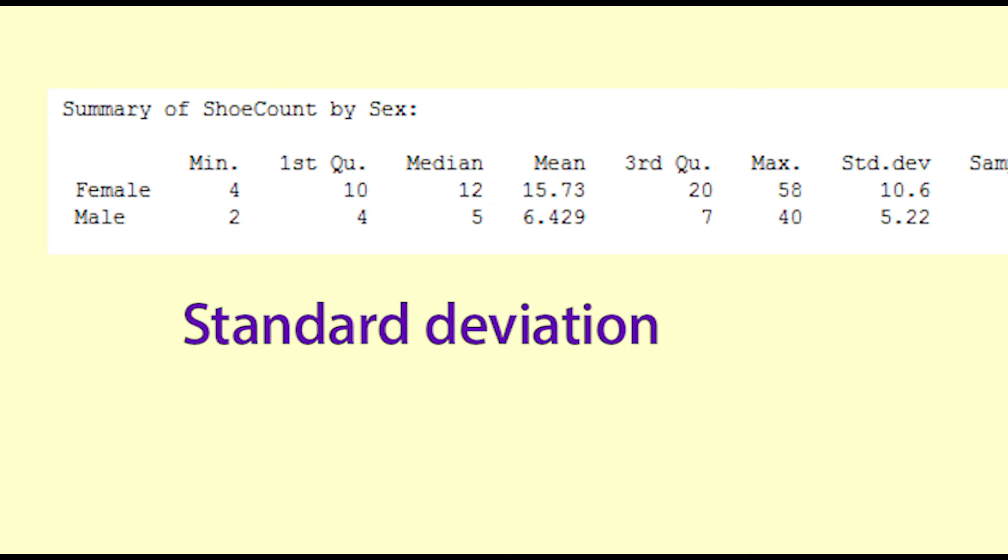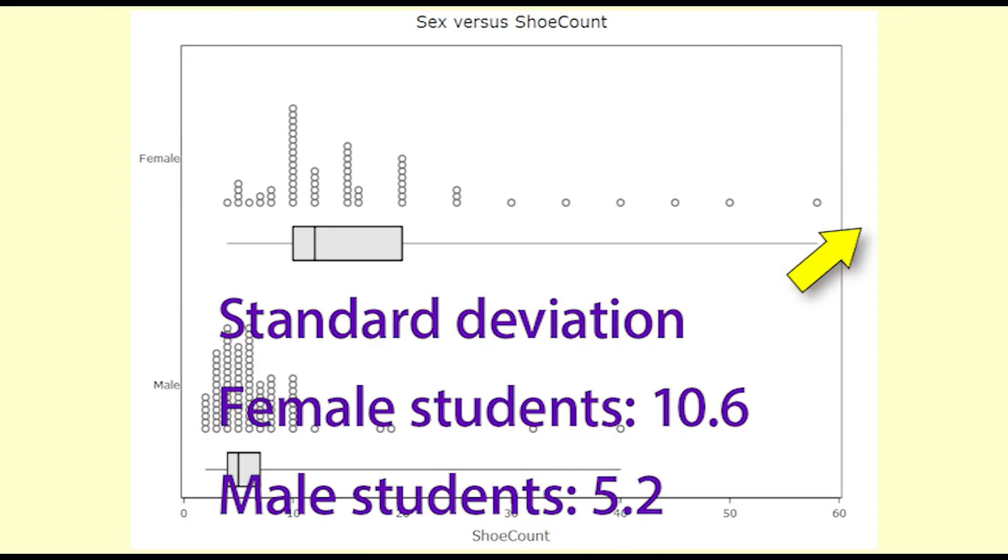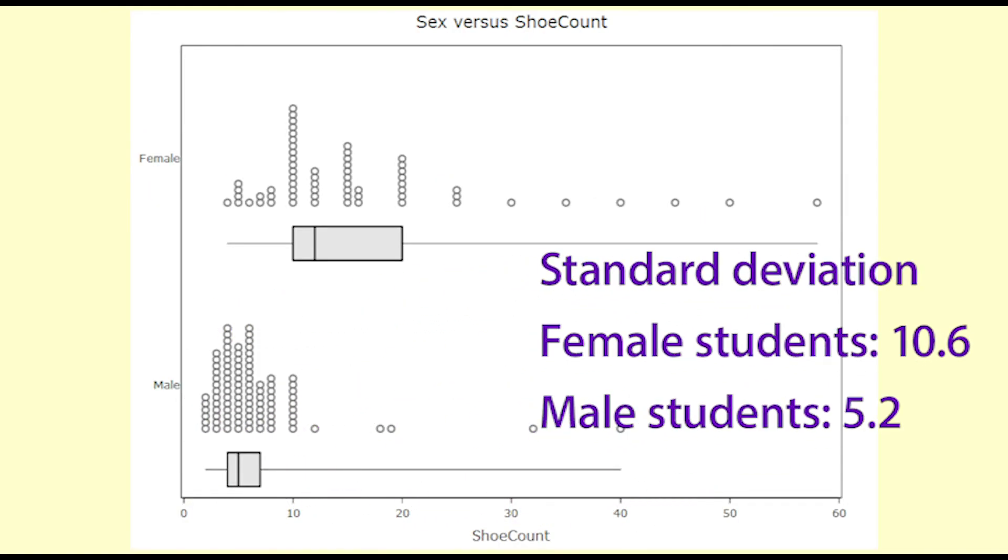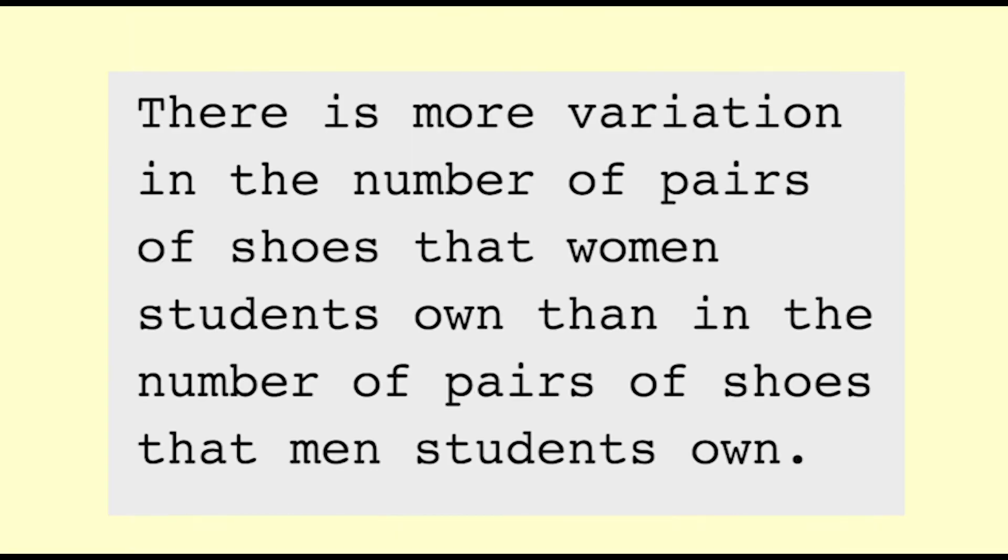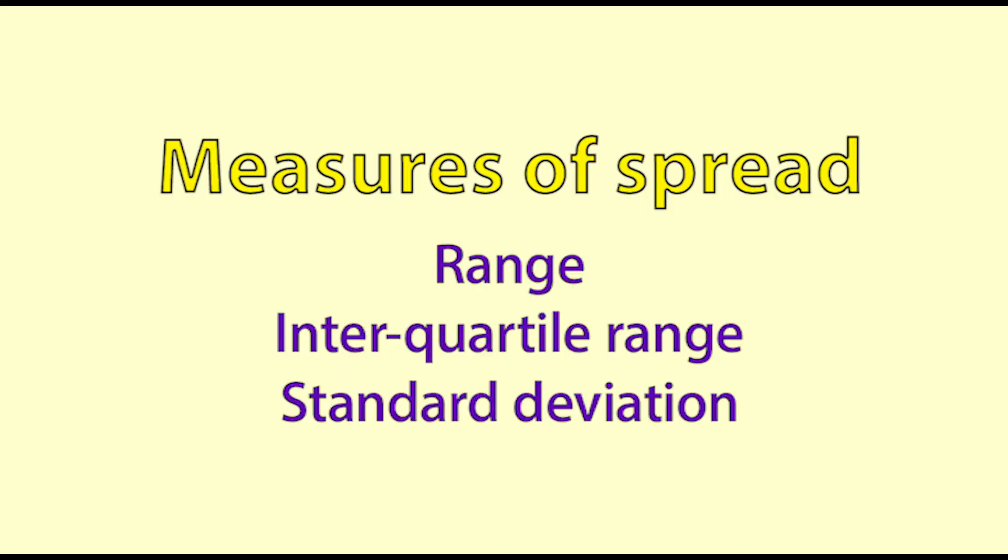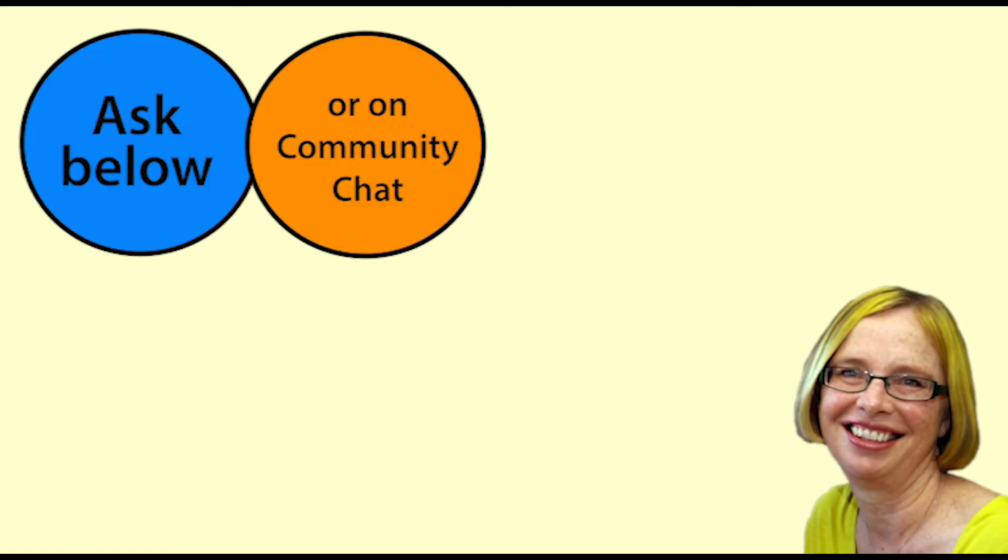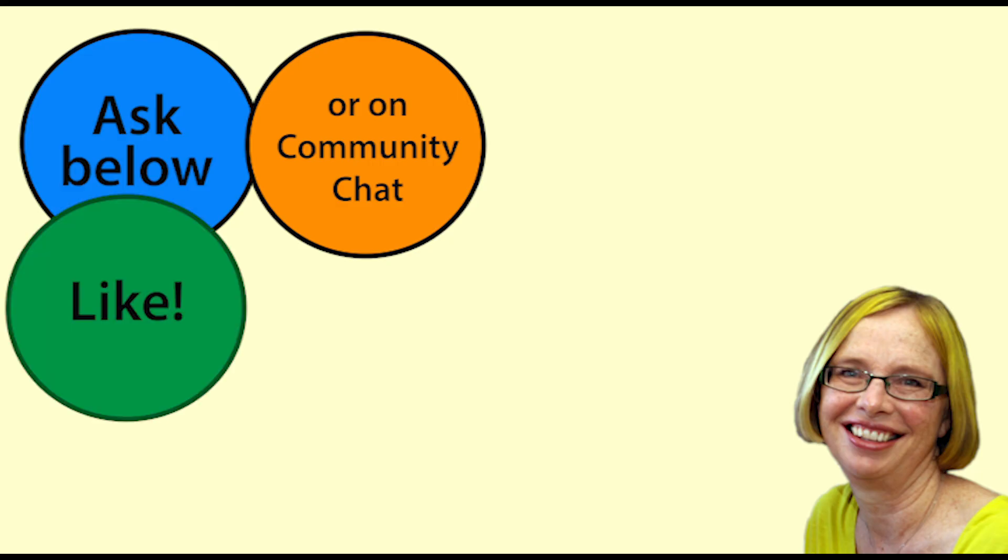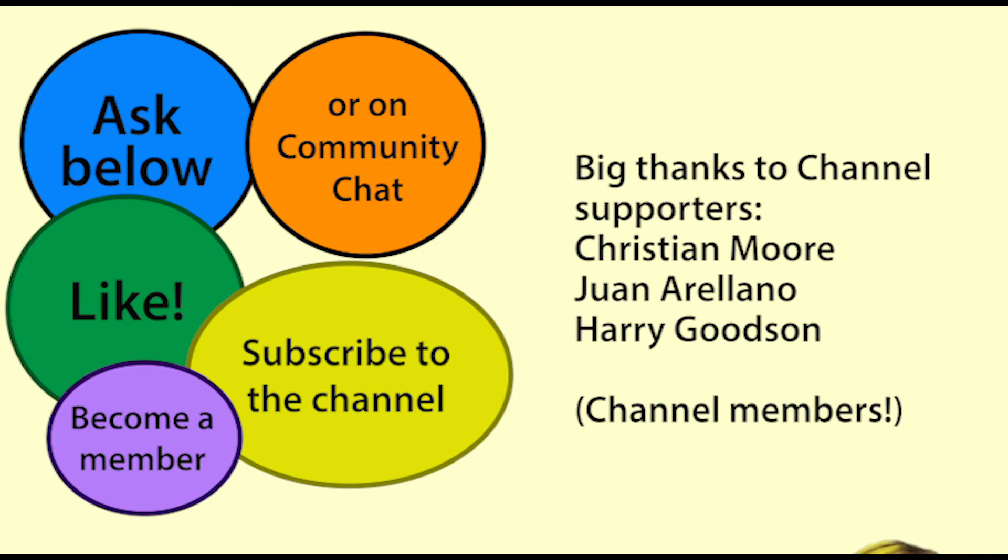The standard deviations for the two sets of data are as follows. Female students 10.6, male students 5.2. These statistics also indicate that the spread for the female students is much greater than for the male students. And this confirms what we can see on the graphs. We would interpret these standard deviations as indicating that there is more variation in the number of pairs of shoes that women students own than in the number of pairs of shoes that men students own. This video introduced three measures of spread: Range, interquartile range and standard deviation. If you would like to know more please ask questions in the comments below or on the channel community chat. Do click on like and subscribe to the channel. To find more stats videos like this one search on Dr Nick and the topic you need help with. And may your data have just the right amount of spread.